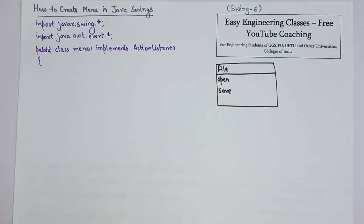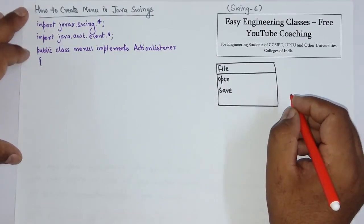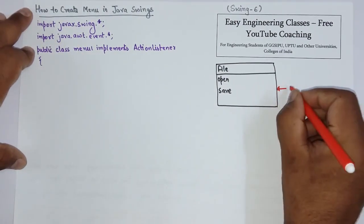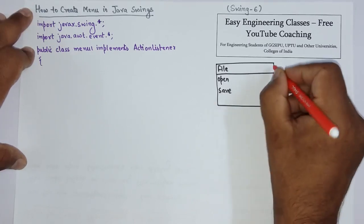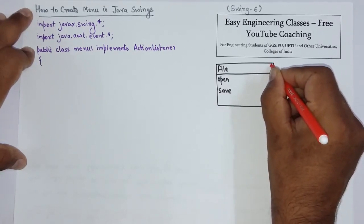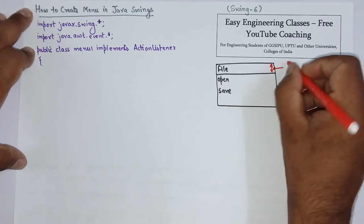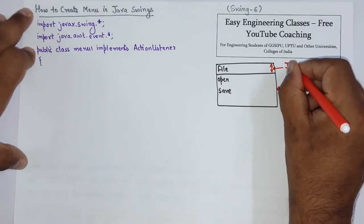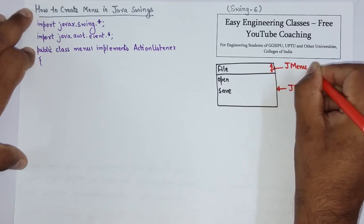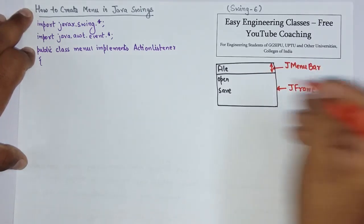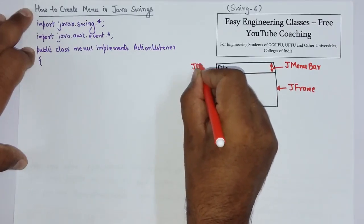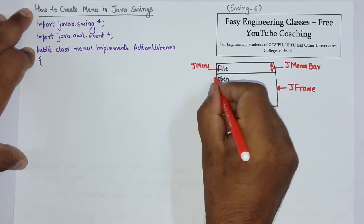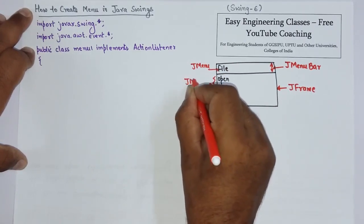So now let's see what all these things are. This is the frame, or I can call JFrame in swings. This particular line from this to this, this is the JMenuBar. This file is JMenu. And these two are JMenuItem.